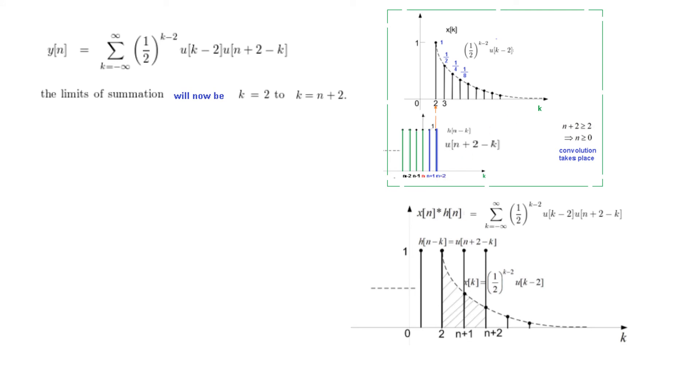So this is important to understand this limit. And so our summation formula will now change from k minus infinity we will write k=2 and the upper limit will now be n+2 from here. And now the u[k] is just 1, this is also 1, so this thing multiplied by 1 will be same. So this is the output which we can plot like shown here.